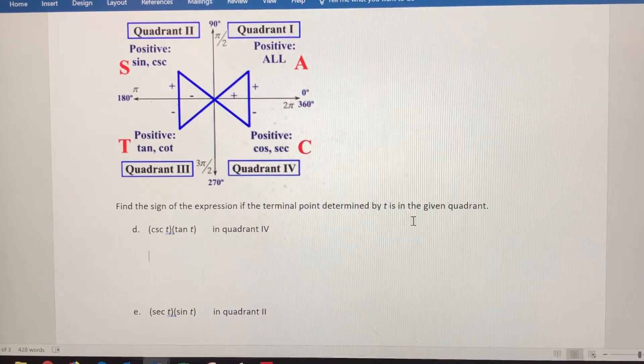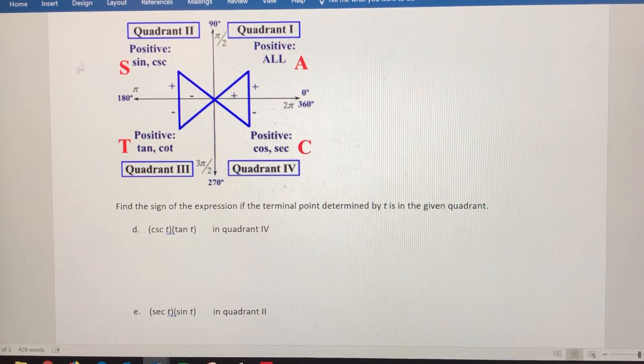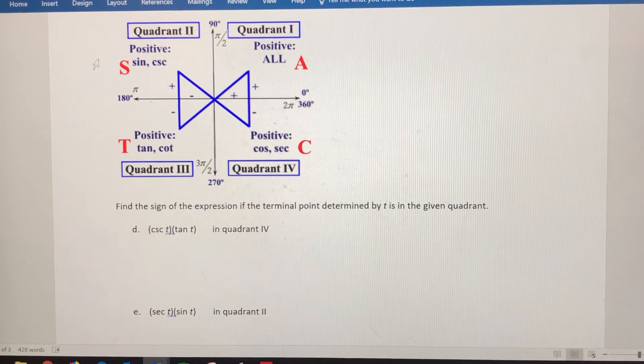Before we get into that, remember in quadrant one, all six trig functions are positive. In quadrant two, sine and cosecant are the only two positive ones. The other four are negative.